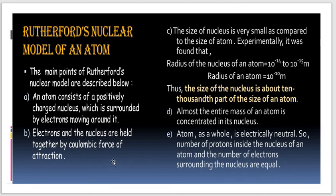Rutherford's atom model is also called the planetary model. The nucleus plays the role of the sun and the electrons correspond to the individual planets of the solar system.